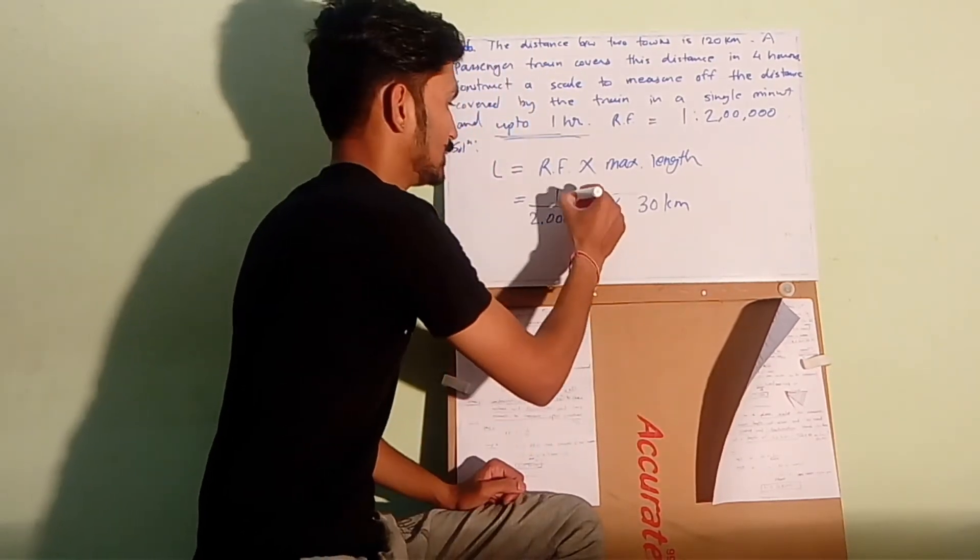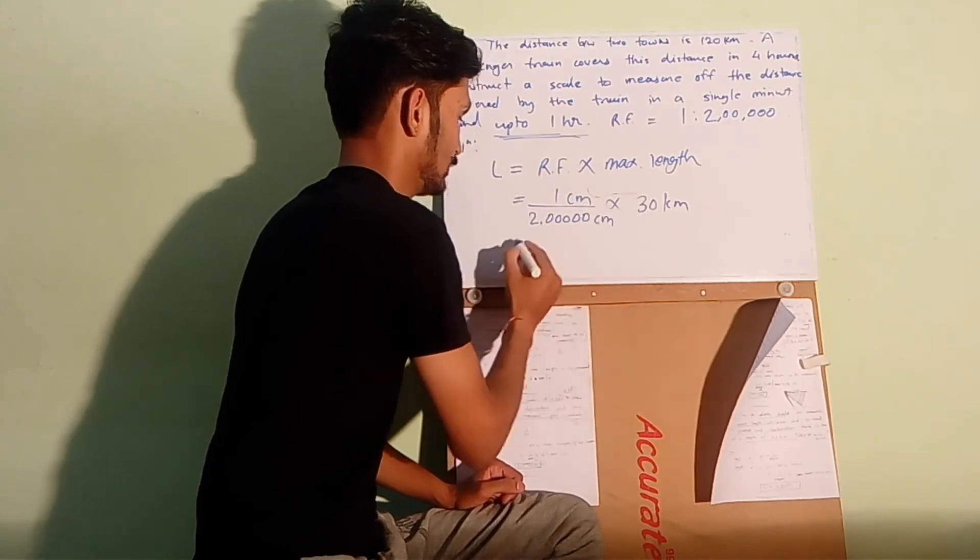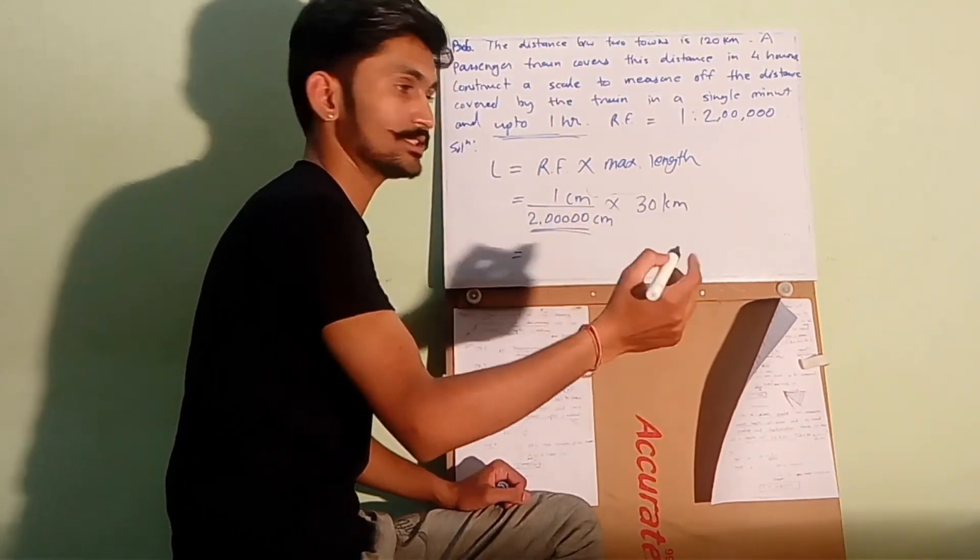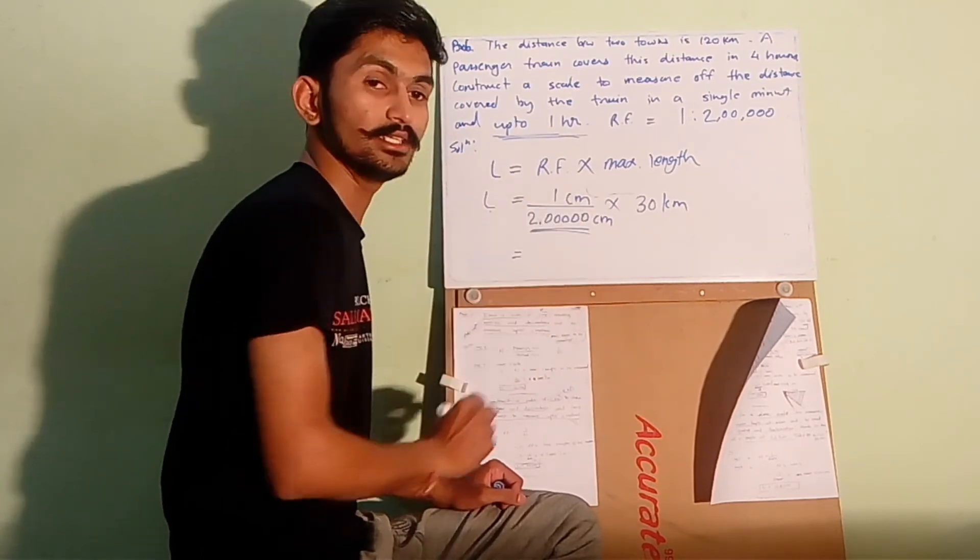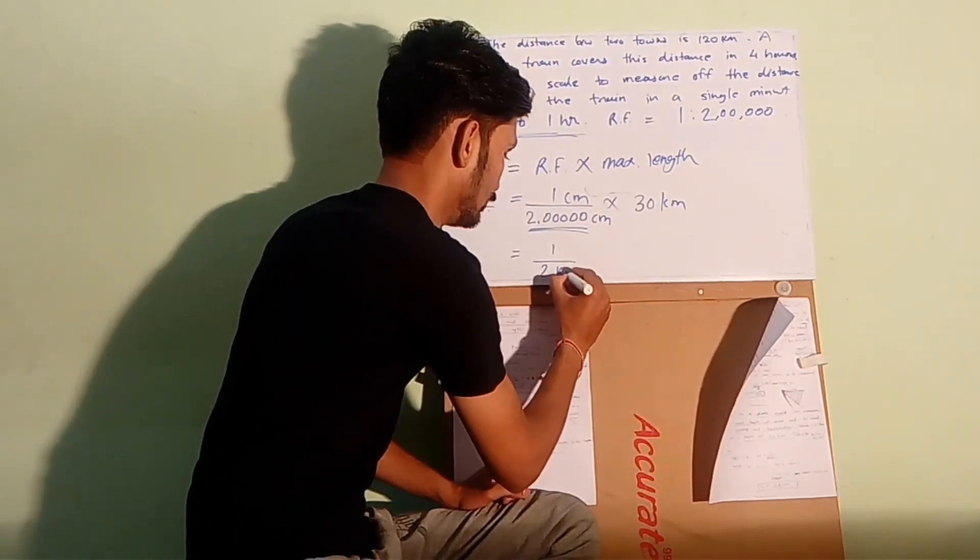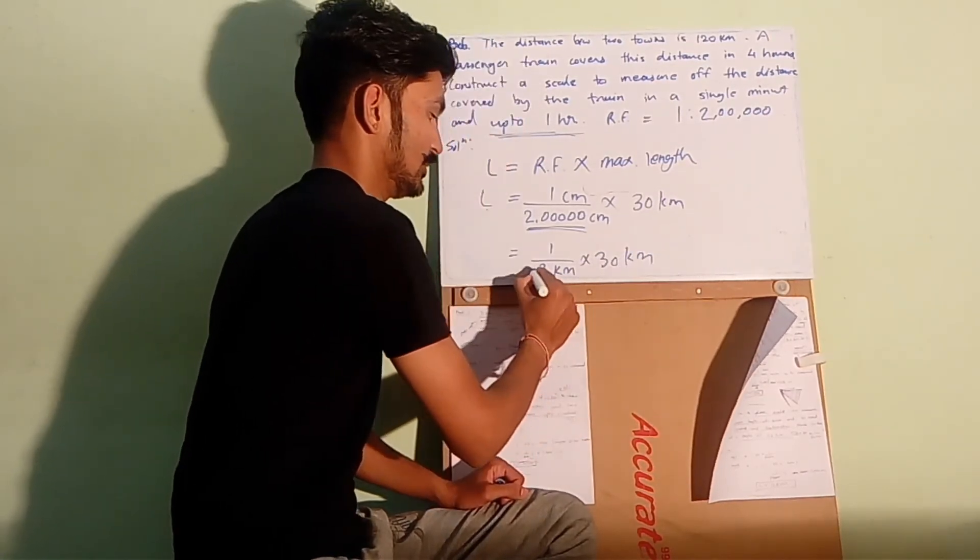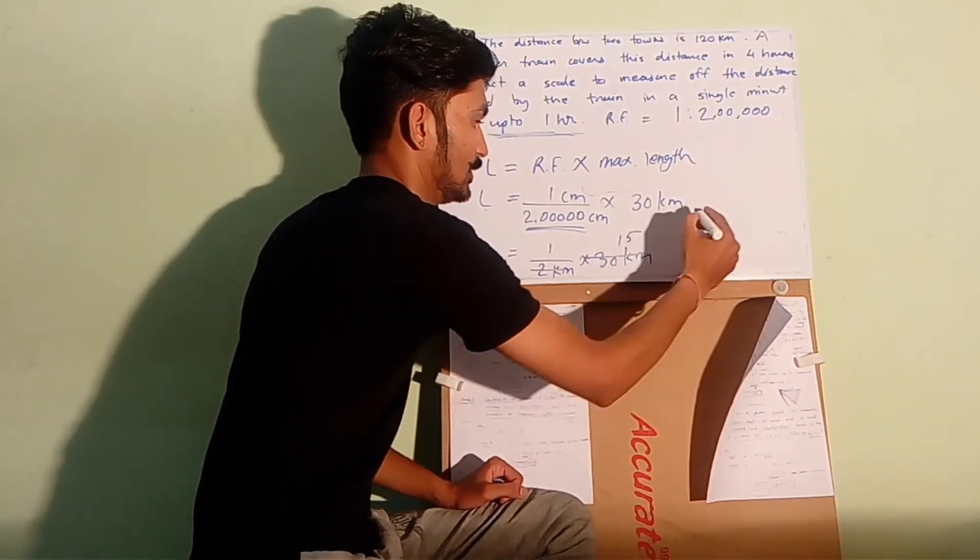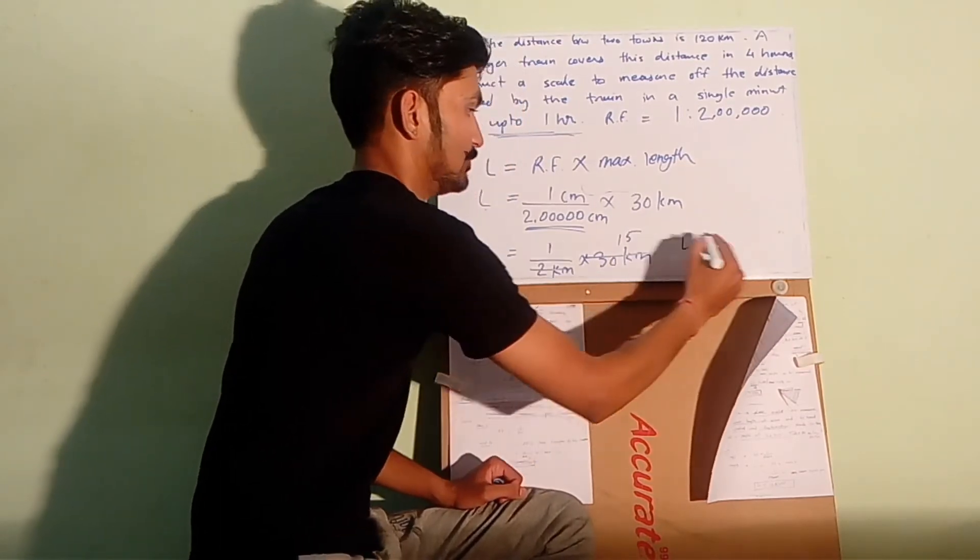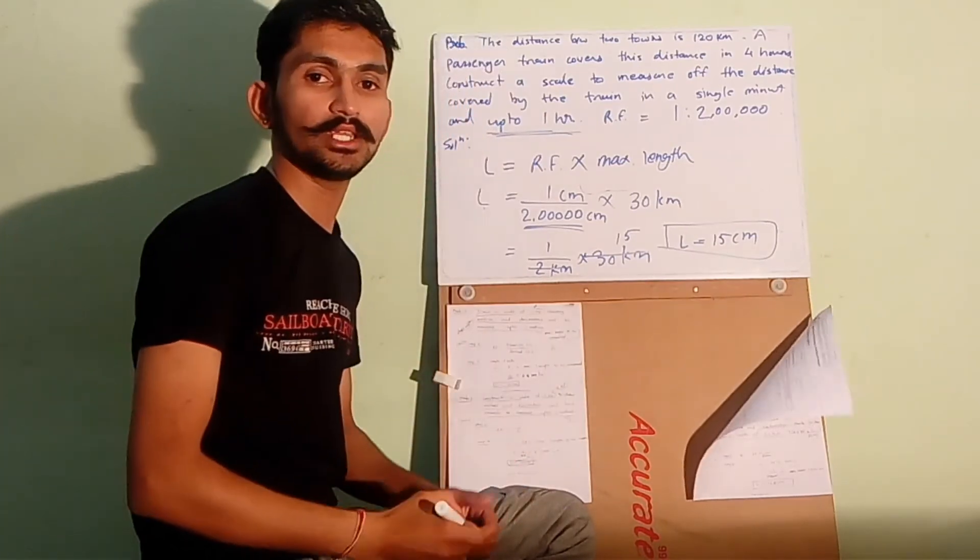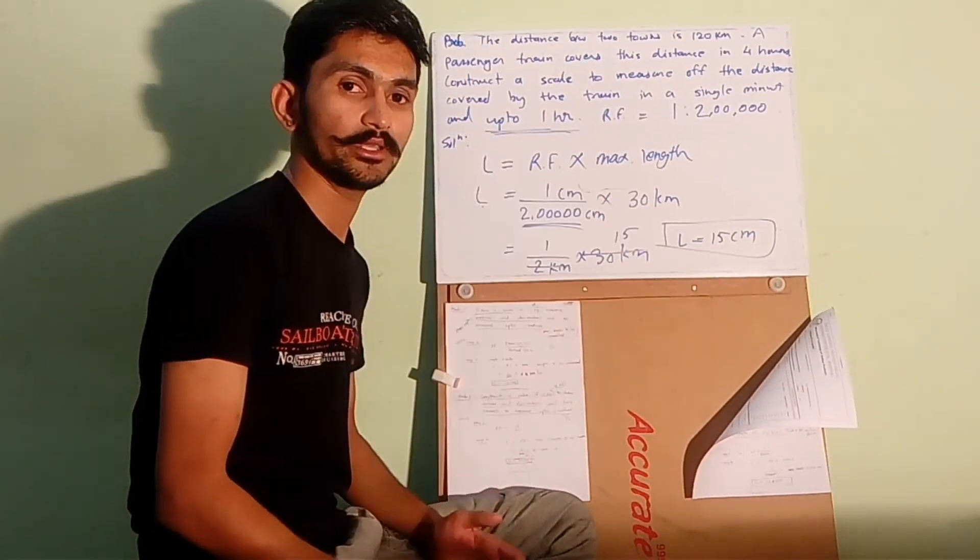So this is in cm, this is in cm. We can convert this into km. km will be cancelled and we will get length of the scale in cm. This will be 1 divided by 2 lakh multiplied by 30 km. So 2 lakh, 30 are 15 and length of the scale is 15 cm. So the length of the scale is 15 cm.